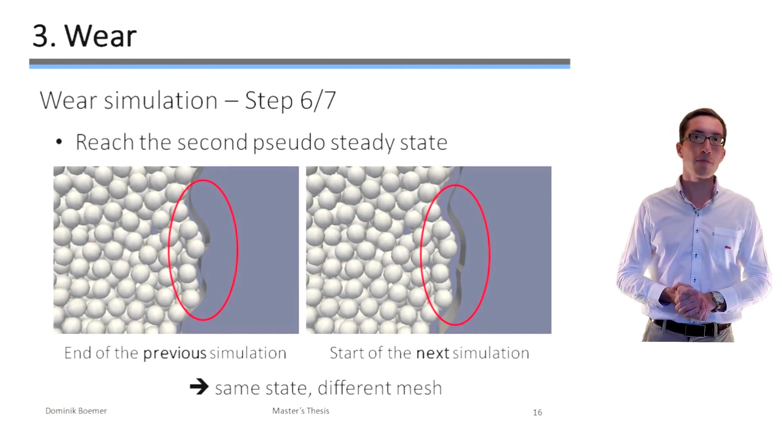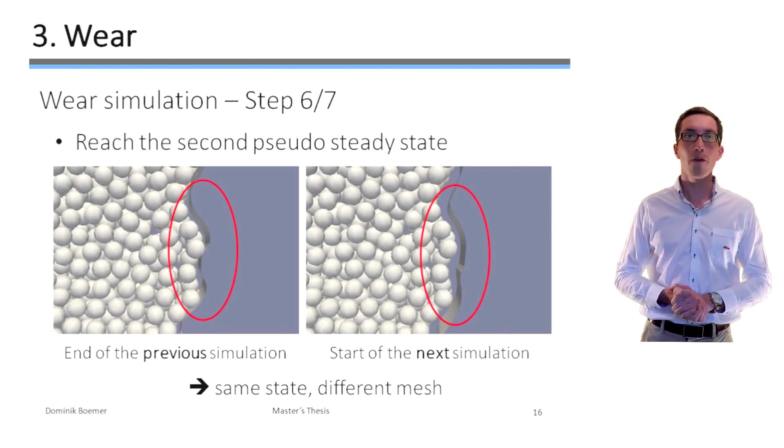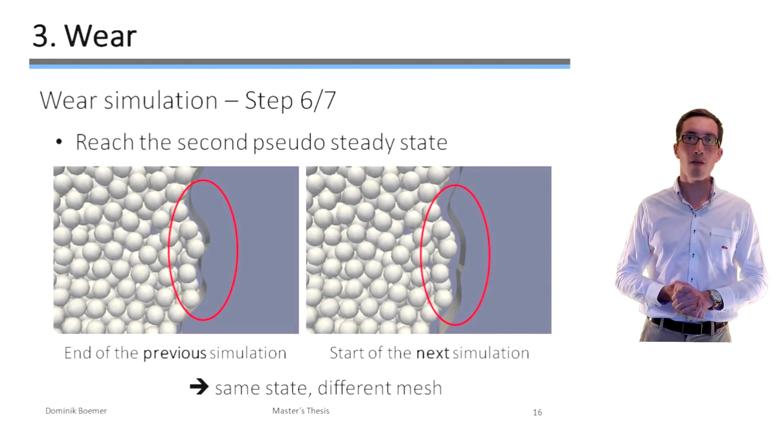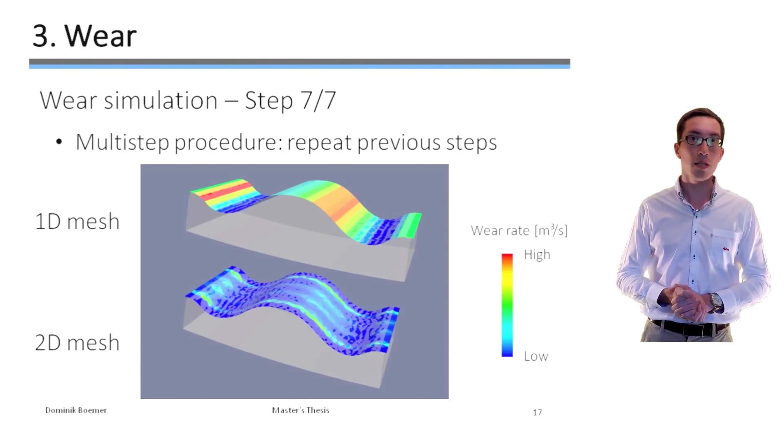So once this second pseudo steady state has been reached with the updated mesh, the wear data is again recorded and the geometry updated and so on. So this procedure is called a multi-step procedure.